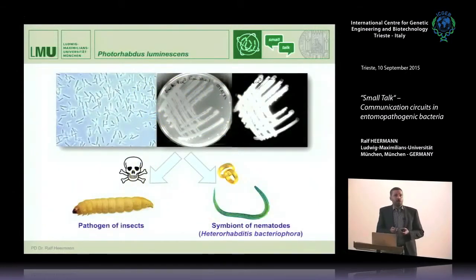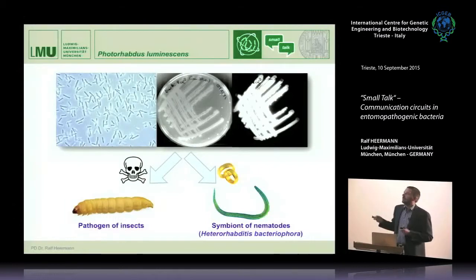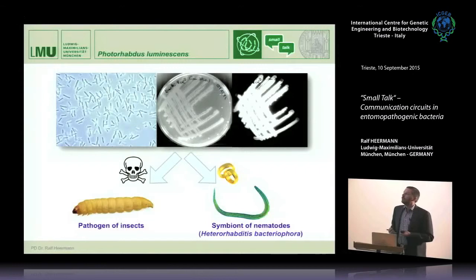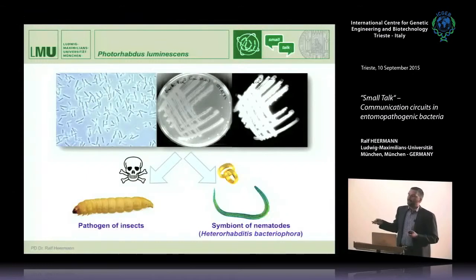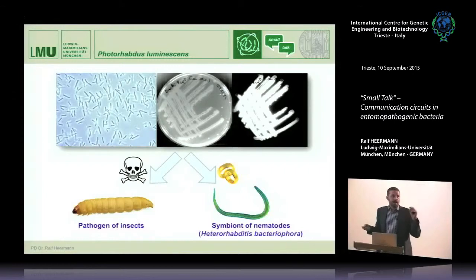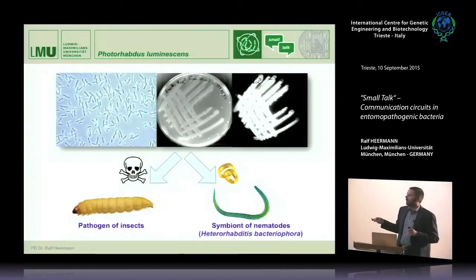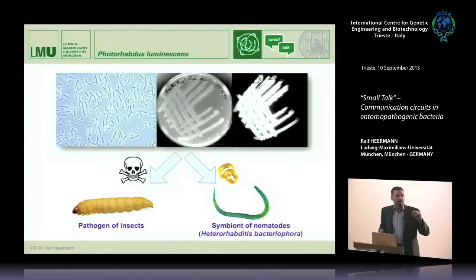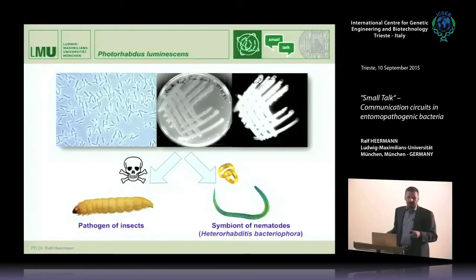We are working with an entomopathogenic bacterium called Photorhabdus luminescens — quite cool bugs, because they produce light. These are the only terrestrial organisms known to be able to produce light. The special thing about these organisms is that they are highly pathogenic against insects and, in turn, are symbionts of tiny worms in the soil — so-called nematodes — specifically Heterorhabditis bacteriophora. These organisms are able to switch between pathogenicity and symbiosis — between good and bad.